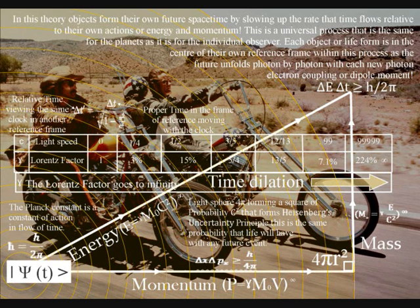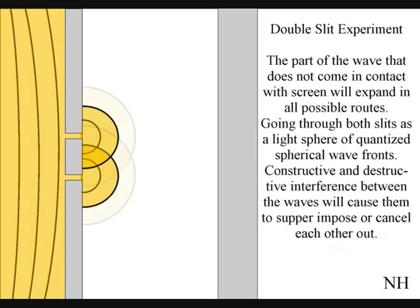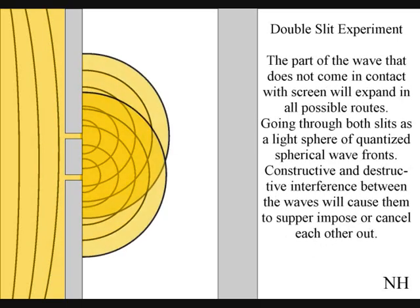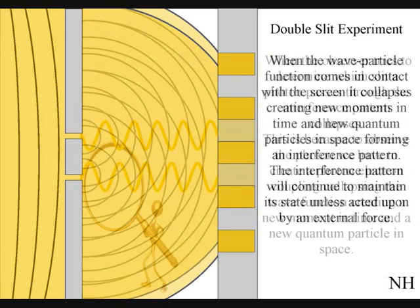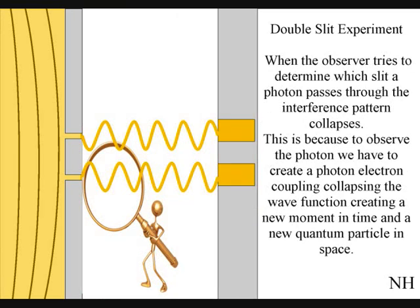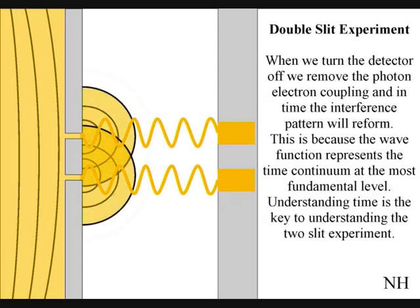The wave-particle duality of light is relative to the energy and momentum of our actions, and therefore relative to the experiments we set up. This can be seen in the two-slit experiment: when we turn on an electronic detector, the interference pattern collapses and becomes part of the past in the reference frame of the experiment. If we turn the detector off over a period of time, the interference pattern will reform.